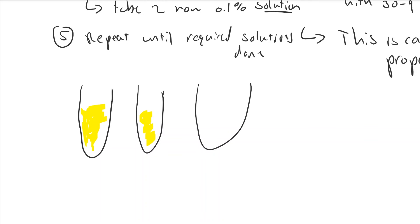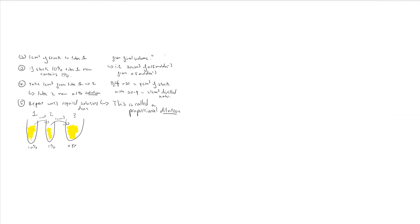I'm just going to do a quick diagram here to make it clear about what you have to do. You have your 10%, your 1%, 0.1%, and you get it by moving 1cm³ of each dilution into 9cm³ of the other one.